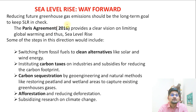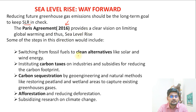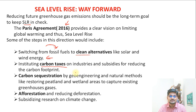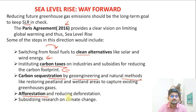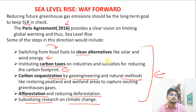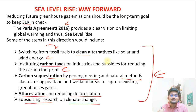The way forward was discussed in the Paris Agreement related to sea level rise. Steps include clean alternatives like solar and wind energy to move away from fossil fuels, instituting carbon taxes on industries and subsidies to reduce people's carbon footprint, carbon sequestration by geoengineering and natural methods, afforestation and reducing deforestation, and subsidizing research on climate change. These ideas are part of sustainable development goals, and the most important way forward is switching to cleaner fuel and cleaner sources of energy to reduce greenhouse gas emissions and curb the menace of sea level rise.